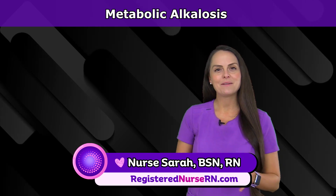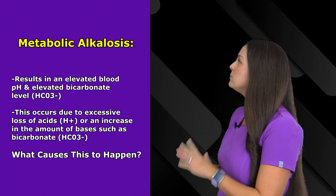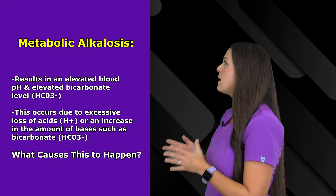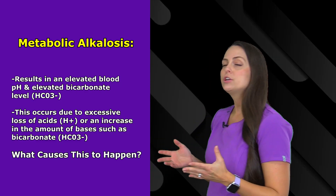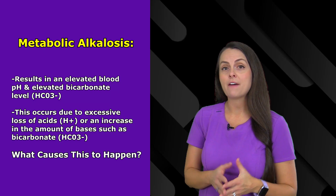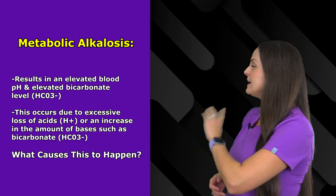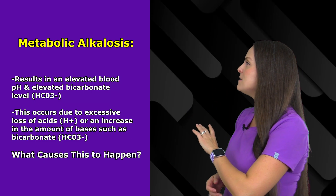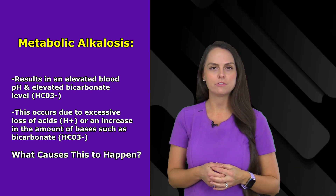Hey everyone, I'm going to talk about metabolic alkalosis. So let's get started. Metabolic alkalosis results in an elevated blood pH and an elevated bicarbonate level, HCO3. This usually occurs because we've had excessive loss of acids such as hydrogen ions, or we've had an increase in the amount of bases like bicarbonate, that HCO3.